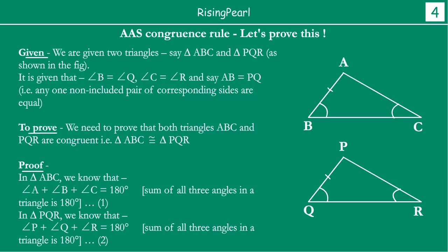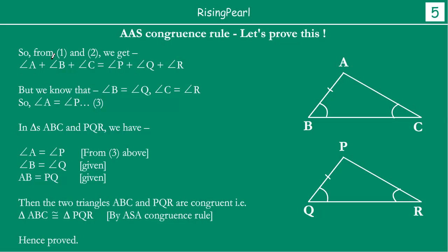So from 1 and 2, we get that A plus B plus C equals P plus Q plus R. But we know that B equals Q and C equals R. So that means A automatically is equal to P. So from here we get A equals P. If angle A equals angle P, then in triangle ABC and PQR, we have angle A equals angle P from 3 above. Angle B equals angle Q, why? Because it is already given. And AB equals PQ, that is also given.